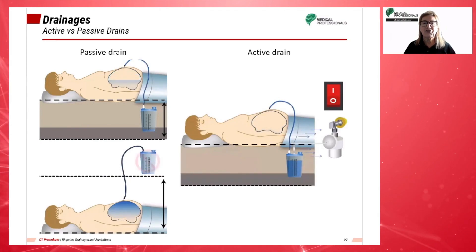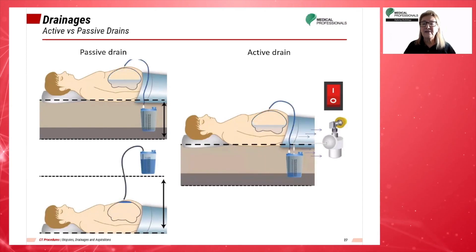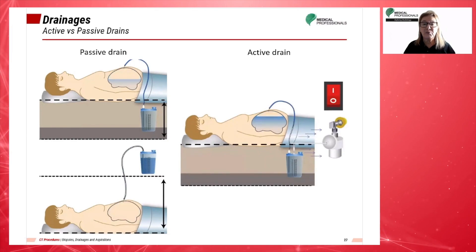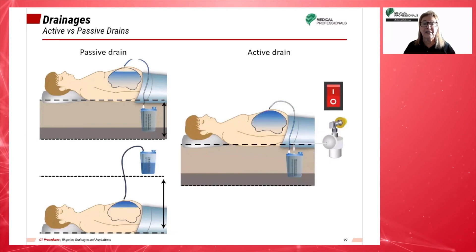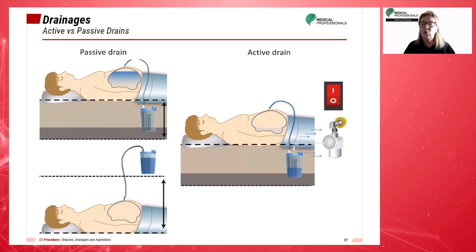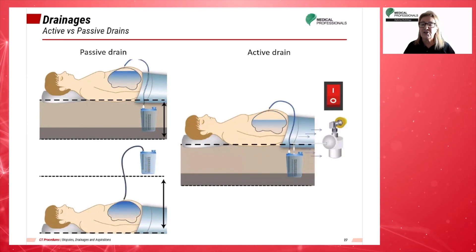There are two types of drains: the passive drain and the active drain. Passive drains are most commonly used in wounds after surgery where dead space is present or when accumulation of fluid is anticipated. Passive drains have no suction and work according to the differential pressure between body cavities and the exterior.